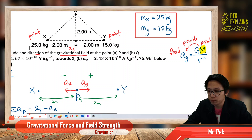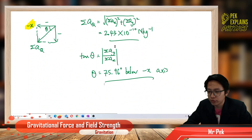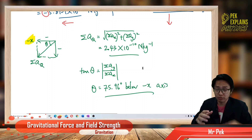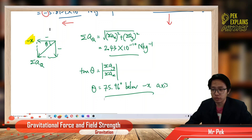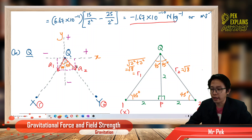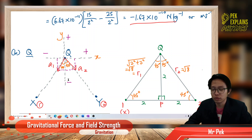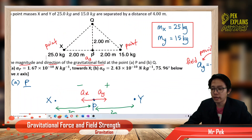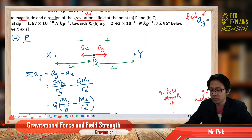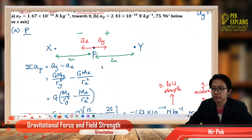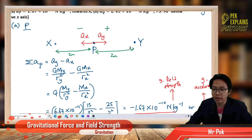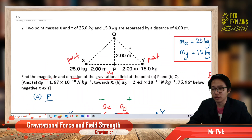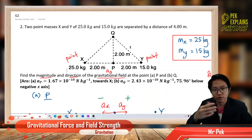So the answers are 2.43×10⁻¹⁰ and 75.96 degrees — correct. That's how you find the resultant gravitational field strength. You must use the vector method: draw arrows, use the vector method, do the X component and Y component, find the magnitude using Pythagoras theorem and tangent theta for direction. Treat gravitational field as vectors — draw arrows and draw a vector diagram. Stay tuned for the following videos. Bye!